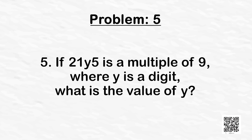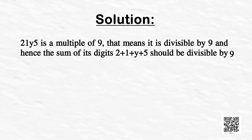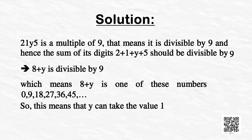Let's look at a final problem: if 21y5 is a multiple of 9 where y is a digit, what is the value of y? Since 21y5 is divisible by 9, the sum of its digits 2 + 1 + y + 5 = 8 + y should be divisible by 9. That means 8 + y is one of 0, 9, 18, 27... Since y is a digit between 0 and 9, y can only take the value 1.